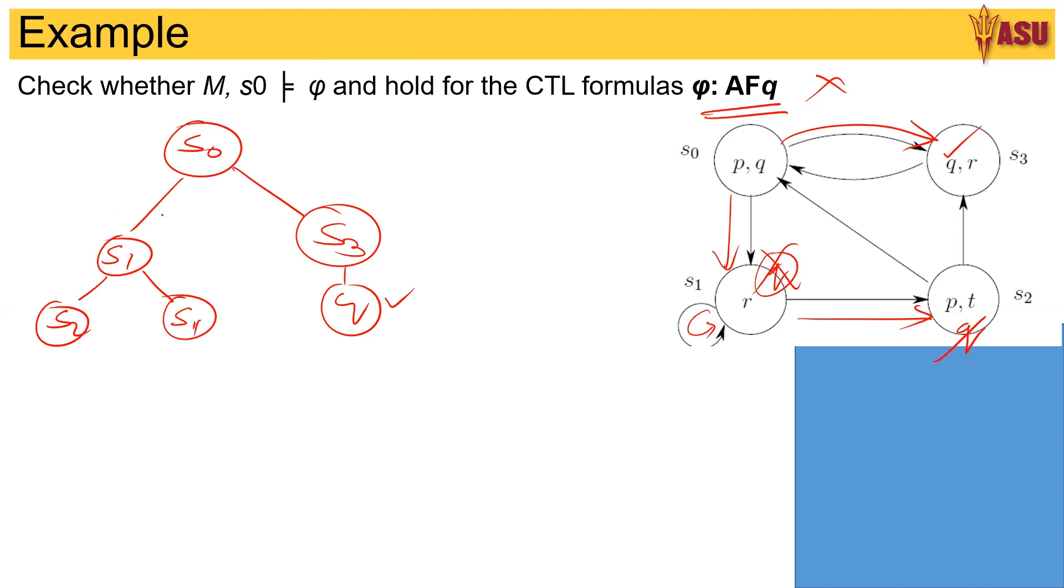Now this clearly is a repeat. So this would again go back to the same thing. That means I am going to have a branch that says s1 dot dot dot s1 and this does not have a q. So it fails.